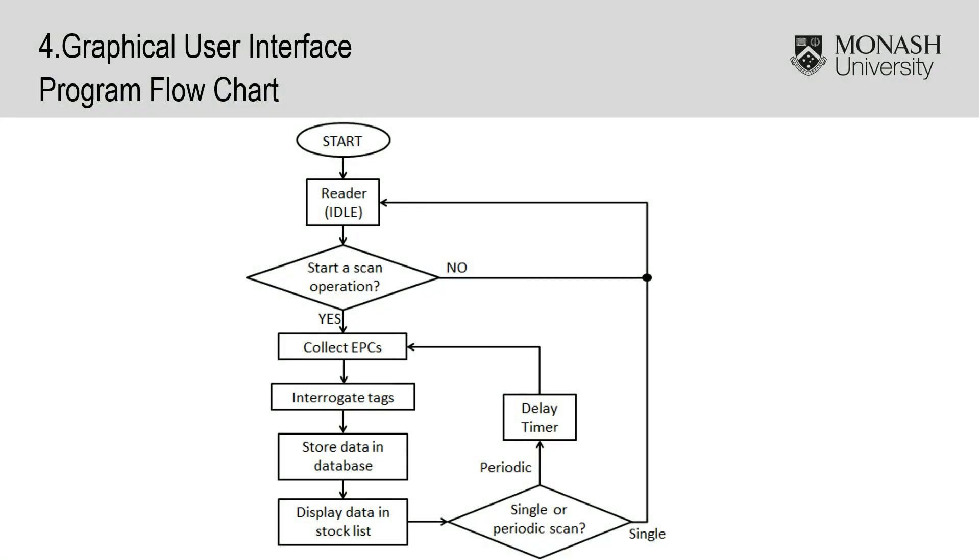Here is the summary flowchart of the GUI code. When the scan operation starts, the antennas radiate energy powering all tags on the shelf. Each tag will then transmit their EPC information back to the reader. Once all EPCs are collected, the tag interrogation starts. The reader will communicate with each individual tag and obtain each data.